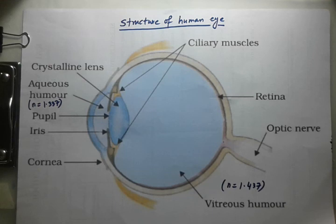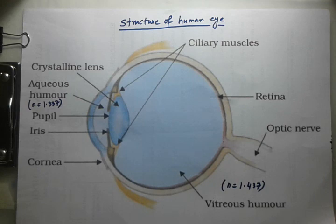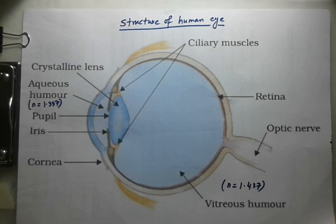The optic nerves connect the light-sensitive cells of the retina to the brain. The blind spot is the region of the retina where the optic nerve enters the eye, and it is totally insensitive to light because there are no rod or cone cells present there. The yellow spot is the region at the center of the retina which has the maximum concentration of rod and cone cells.